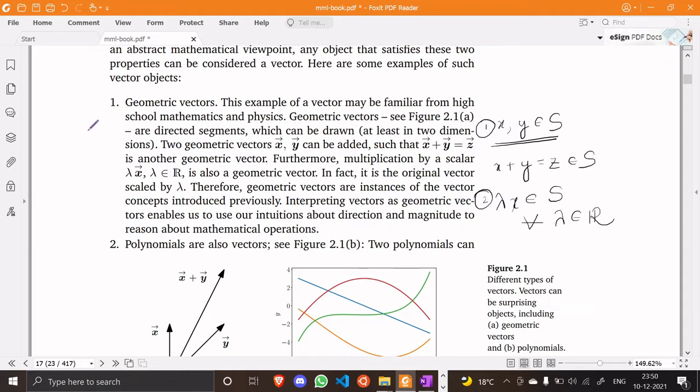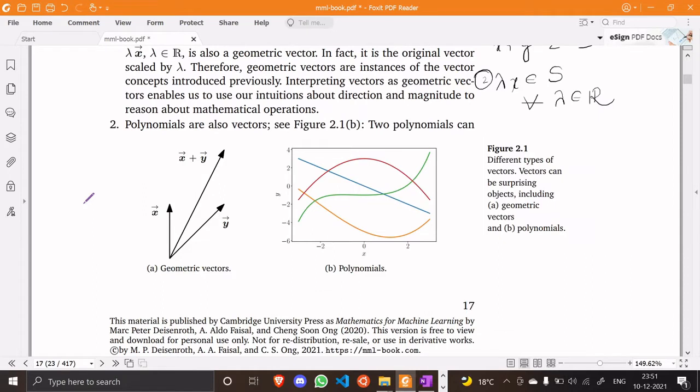Now we say that objects or you could say variables which satisfy these two properties are vectors. So this book gives you some examples of such objects which satisfy this property. Now let's look at the geometric vectors which are the vectors which we usually are exposed to in the beginning.